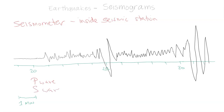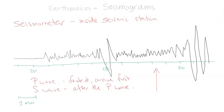We know we have the S wave — but which is which? The P wave is the fastest, so it will arrive first before the S wave. The S wave is still quick, but it arrives after the P wave. These seismograms have time stamped into the data, so this green line right here is time.